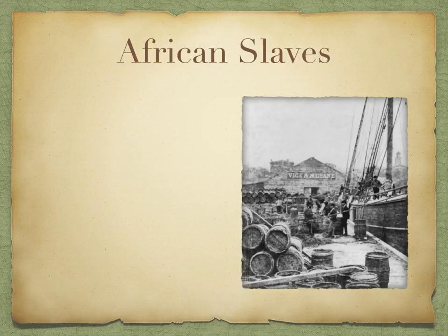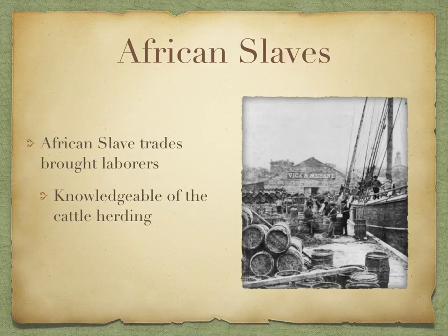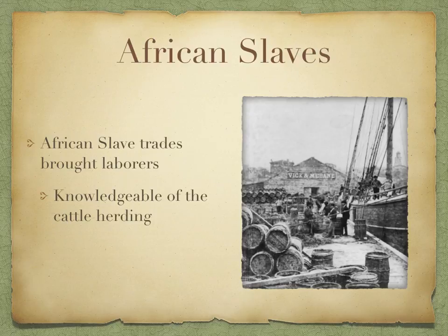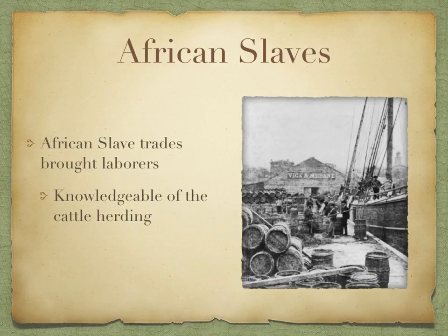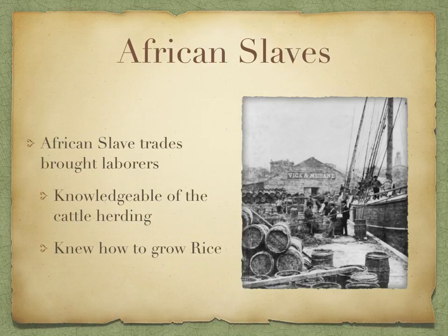African slaves were brought in as laborers. They were growing cash crops like rice and indigo — very labor-intensive crops. Planters wanted specialized labor, so they brought in slaves from West Africa who already knew how to grow rice, or those used to working in a plantation system from Barbados. A slave does not have to be paid — planters paid a one-time price and worked that slave their entire life, unlike indentured servants who were let go after a certain number of years. African slaves also had knowledge of cattle herding from their time in Africa.